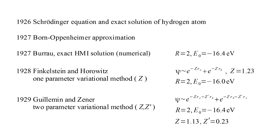In 1929, Guillemin and Zener presented a two-parameter variational model that matched the exact solution's nuclear separation and energy values to three digits. The Guillemin and Zener trial wave function extends that of Finkelstein and Horowitz by adding terms with a parameter z' that effectively stretches each of the 1s atomic orbitals toward the location of the other proton. This models what's referred to as polarization.